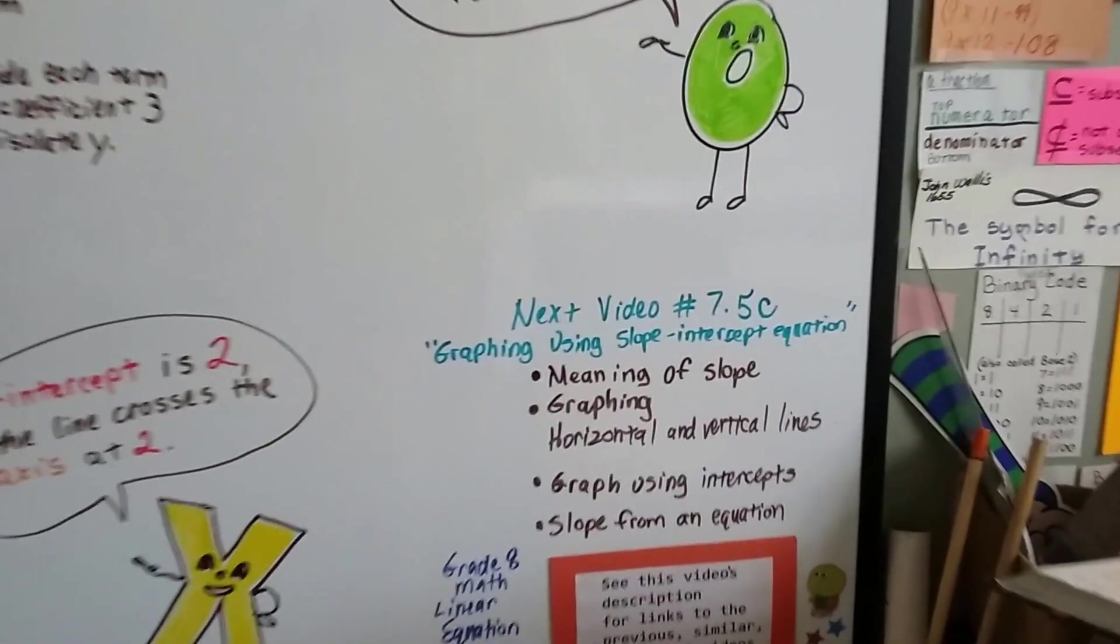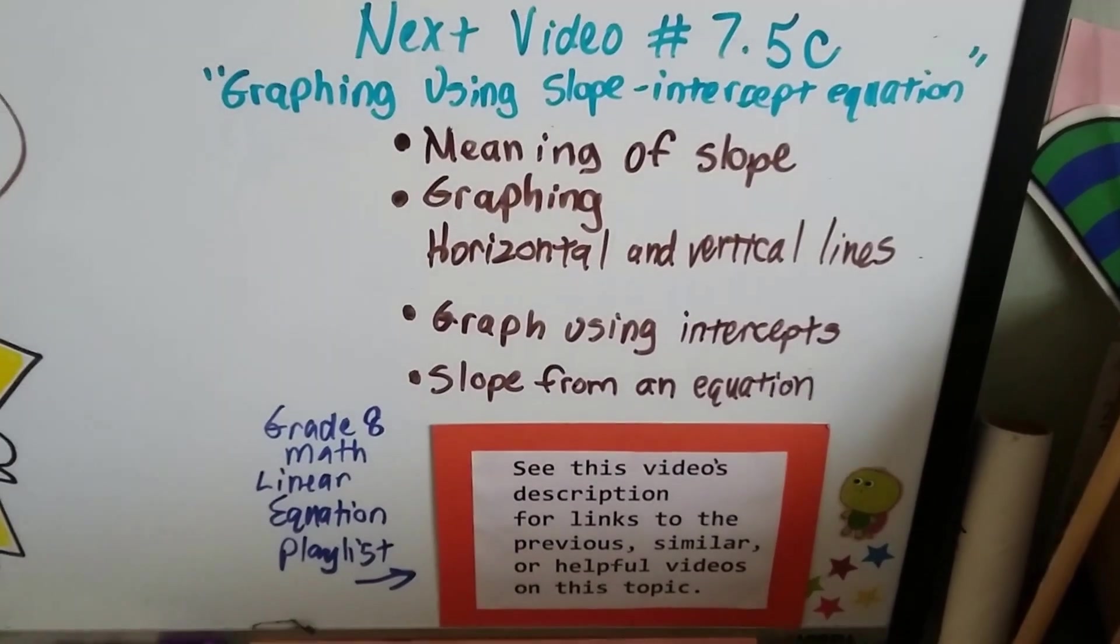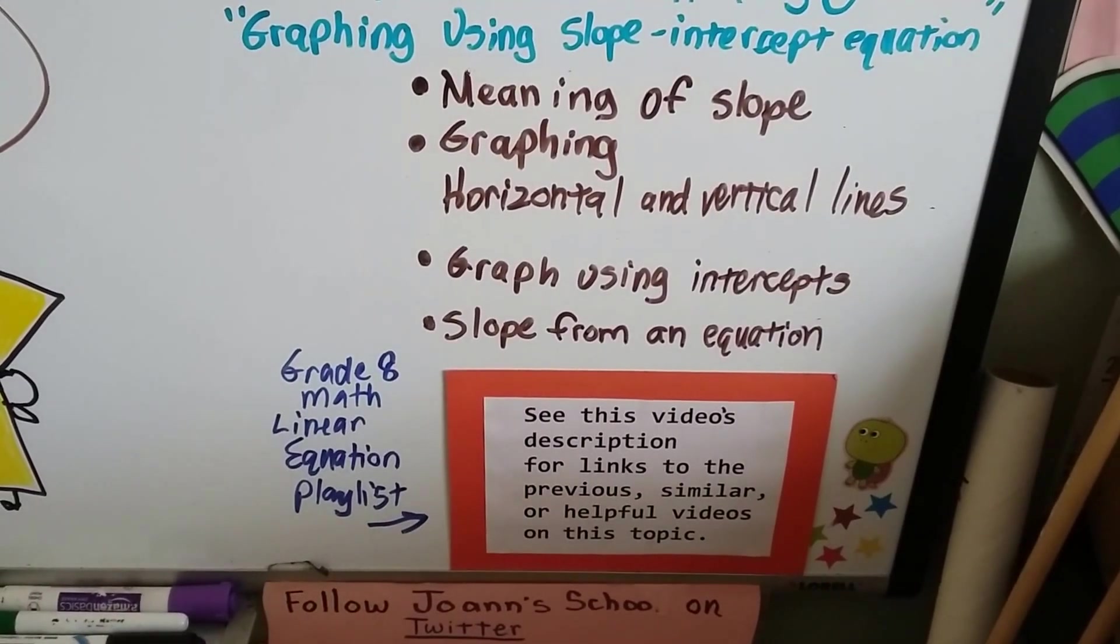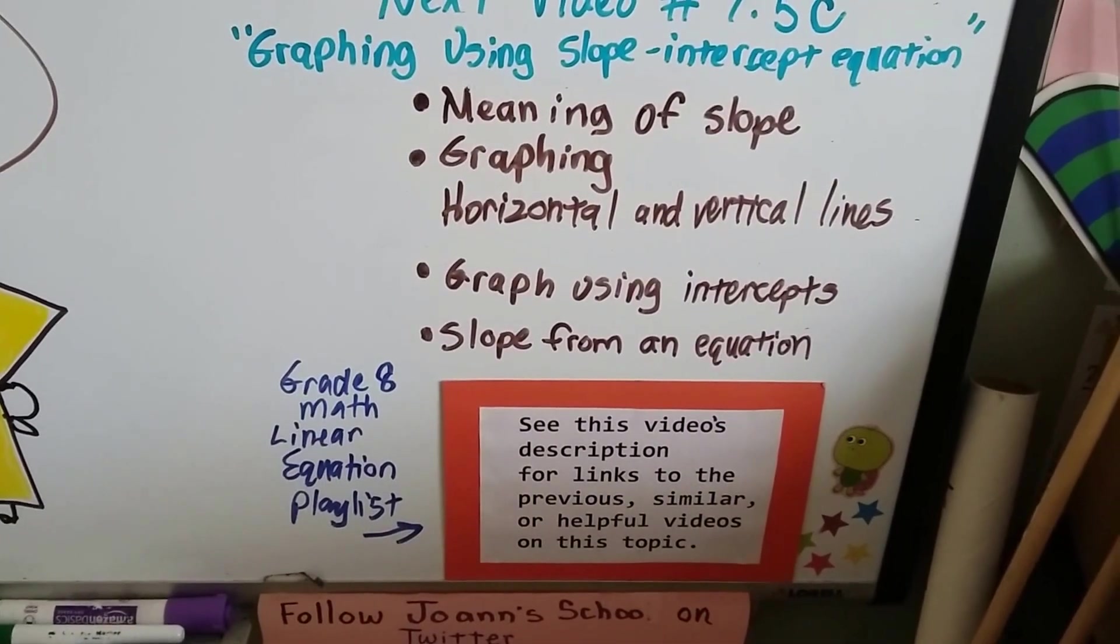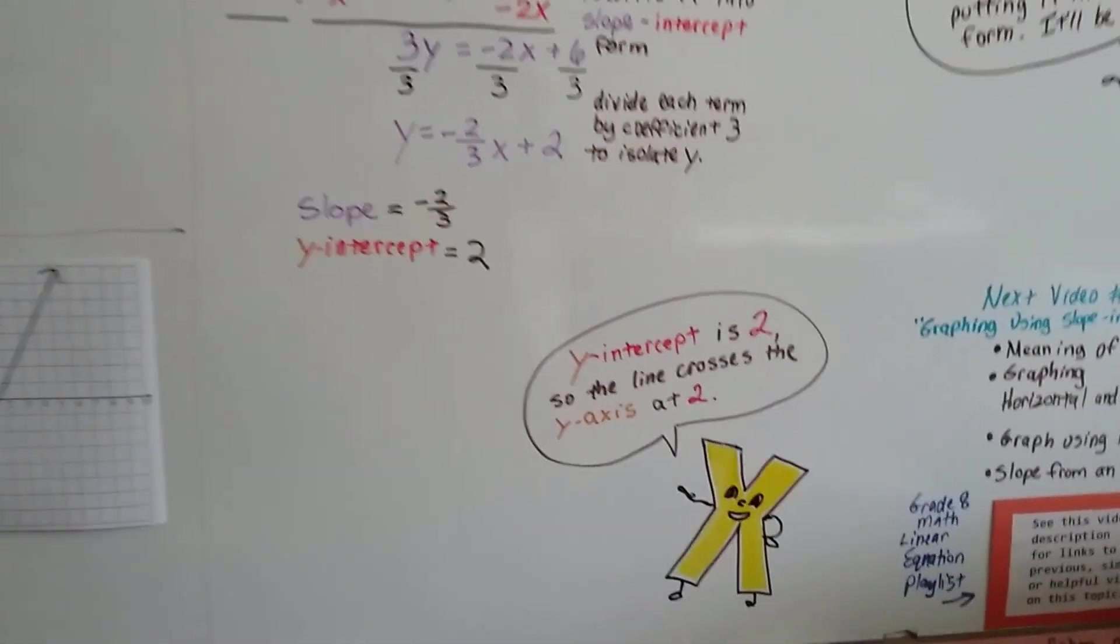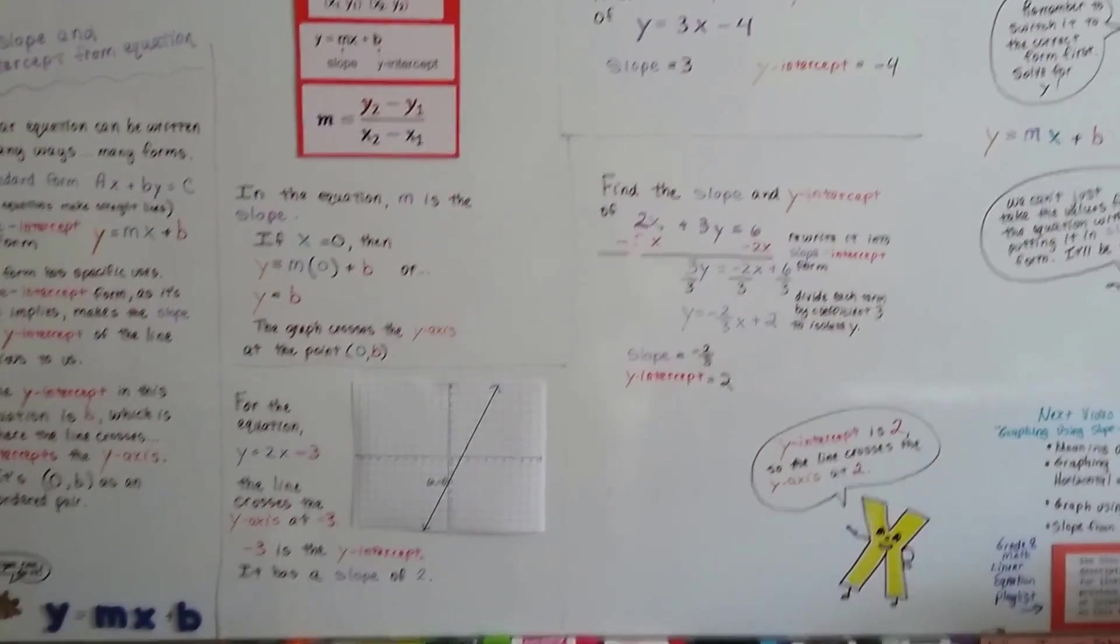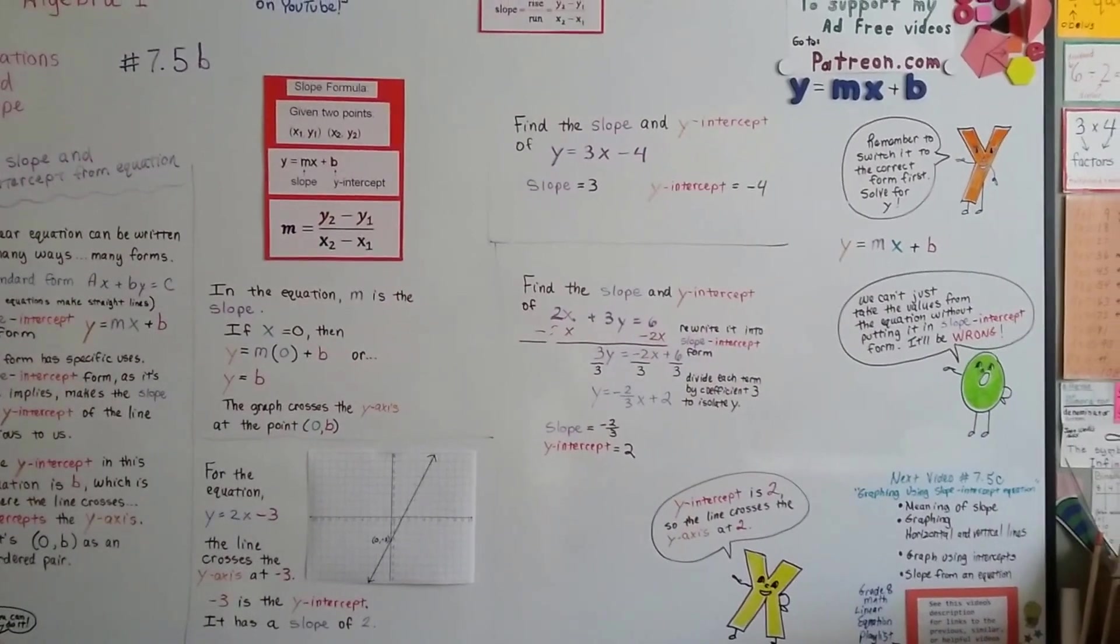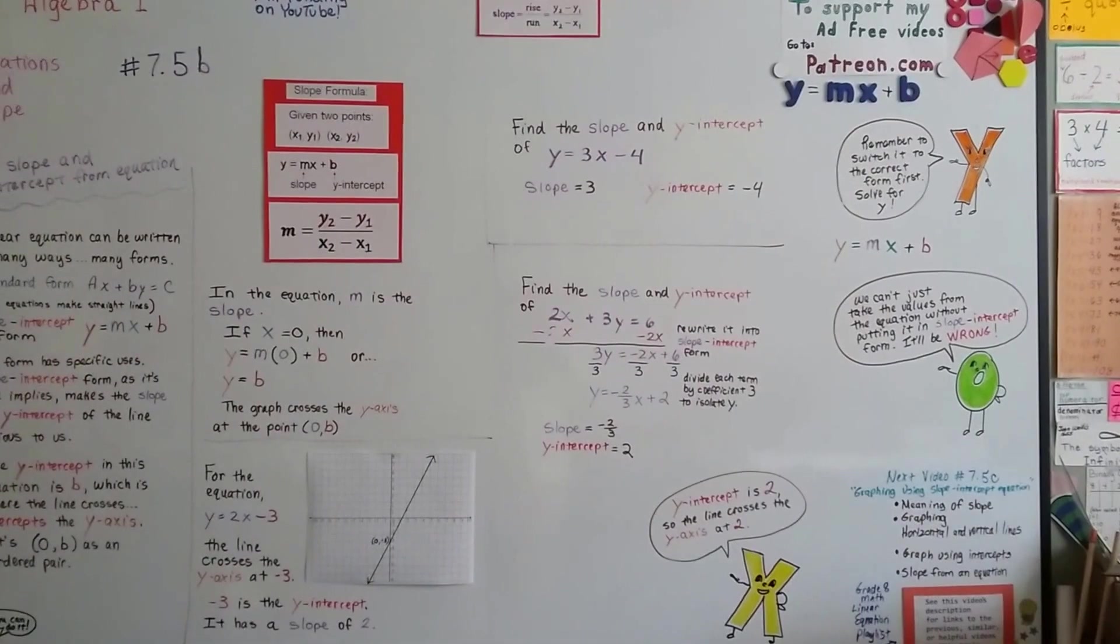Our next video, number 7.5c, is going to be graphing using slope-intercept equations. And there will be links to the meaning of slope and graphing horizontal and vertical lines and graphing using intercepts and the slope formative equation. And I'm even going to put a link to my grade 8 math linear equation playlist because there's a lot of good information in that playlist about linear equations. And my grade 8 math playlist has a lot of Algebra 1 in it. It's just that this Algebra 1 playlist goes into a little more detail and a little more in-depth. I'll see you next video. Bye!